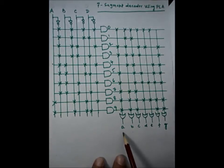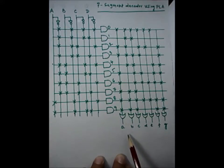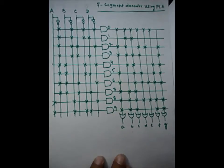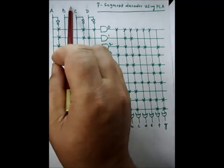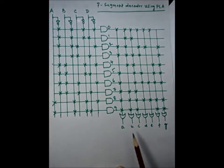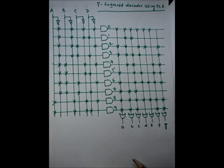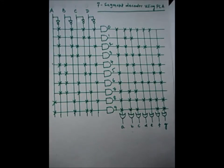The labels A, B, C, etc. here refer to the segments of the LED in the seven segment display. These connections are made to the seven segment display so that the required number is displayed in decimal form. We give the input in binary form, and the seven segment display shows the output in decimal form. This is the fundamental principle of displaying digits 0 to 9 using a seven segment display with PLA.